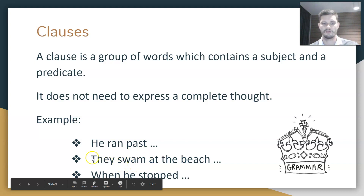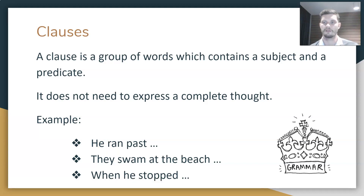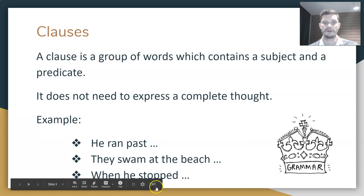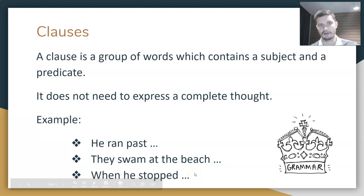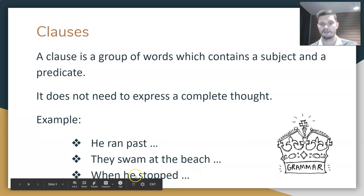'They swam at the beach.' 'Swam' is the verb, 'they' is the subject — so 'they swam at the beach' is a clause; it contains everything it needs. 'When he stopped.' It has a verb, 'stopped,' and a subject, 'he.' However, this one does not express a complete thought, so it is a clause but it cannot act as a complete sentence.